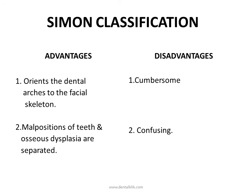Deviations of dental arches in relation to the Orbital Plane according to Simon may occur as follows: both jaws may be in normal relation to each other; the upper jaw may be normal and the lower jaw distal; or the upper jaw may be normal and the lower jaw mesially placed.